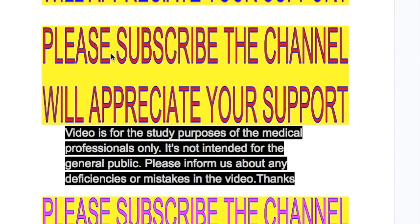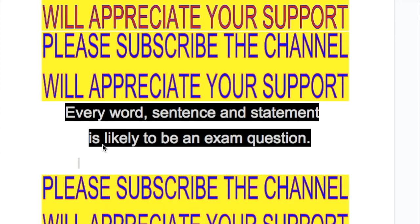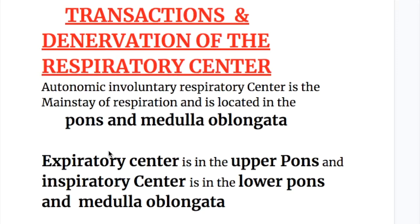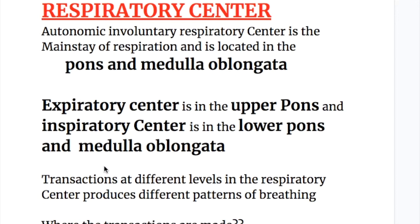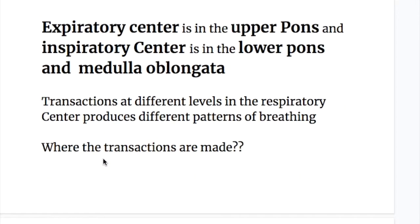In this video we will discuss the effects of transections of the respiratory center at different levels, and the effects of denervation of the vagus nerve and denervation of the chemoreceptors. The autonomic involuntary respiratory center is the mainstay of respiration and is located in the pons and medulla. The expiratory center is in the upper pons and the inspiratory center is in the lower pons and medulla.